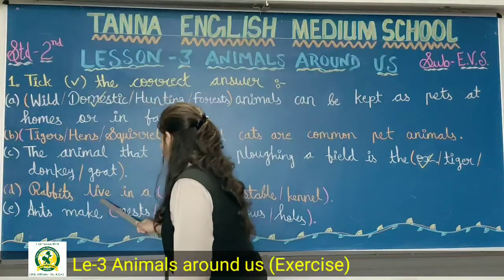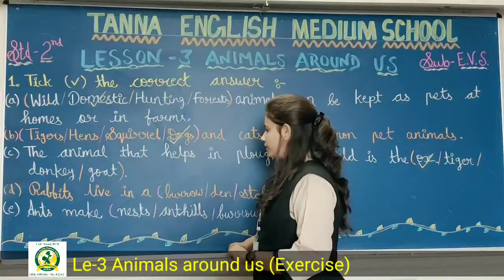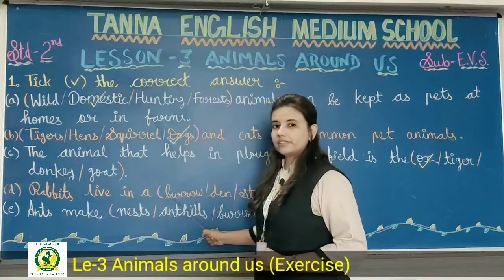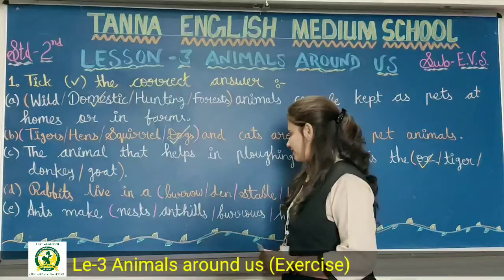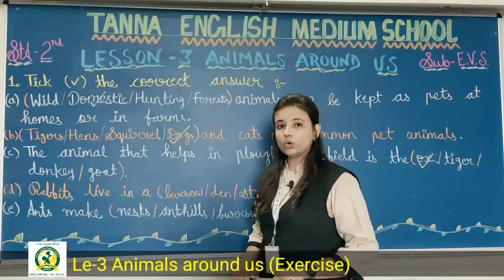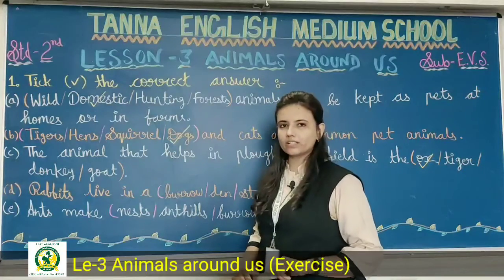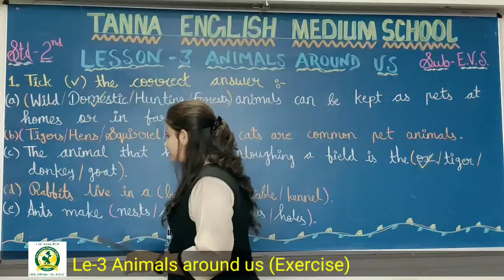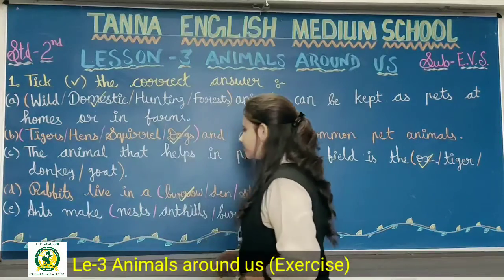Next question: rabbits live in a dash. Students, rabbits jahan pe rehte hai usko hum kya bolte hai? And your options are: burrow, den, stable, kennel. Burrow — rabbits burrow mein rehte hai? Yes, this is your correct answer. Den mein kaun rehte hai? Lion rehte hai den mein. Stable mein? Horse — horse jahan pe rehta hai usko hum kya bolte hai students? Stable. Kennel? Dog ke ghar ko bolte hai na. Sab hum ne homes of animals mein sikha sab kuch. So rabbits live in a burrow — all of you tick the option: burrow.